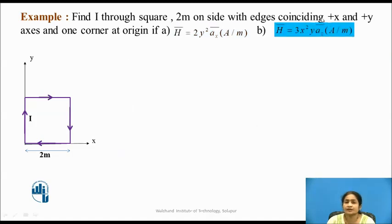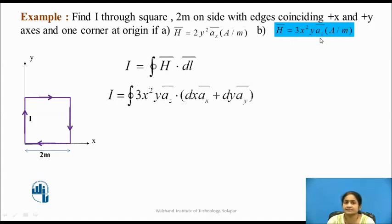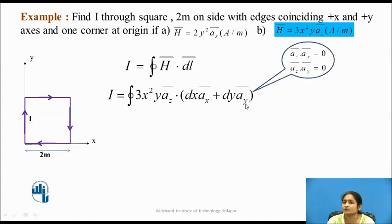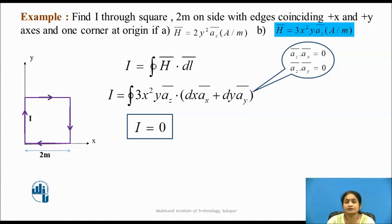Similarly, for H̄ = 2x²y·Āz, when we take the dot product with dL̄ = dx·Ax + dy·Ay, there is no z-component in dL̄, so the dot products Az·Ax and Az·Ay are both zero. Therefore, in this case the current i = 0.